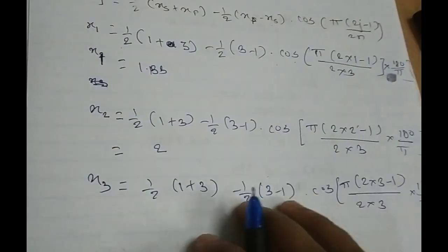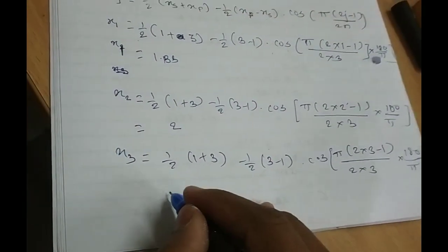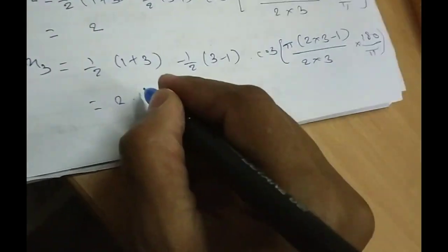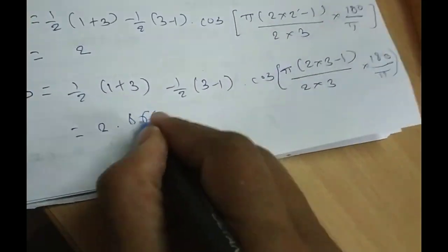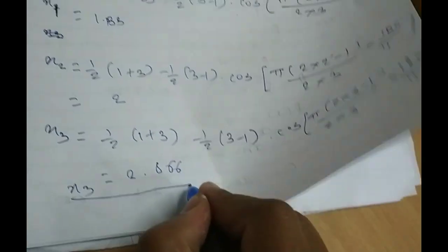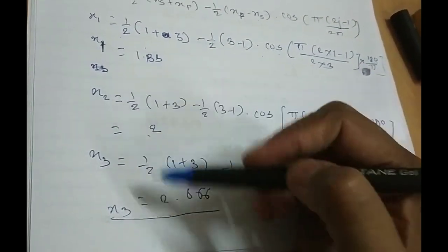So I wrote here and the answer is 2.866. x3. And now as we get the x1, x2 and x3, let's just calculate y1, y2 and y3.